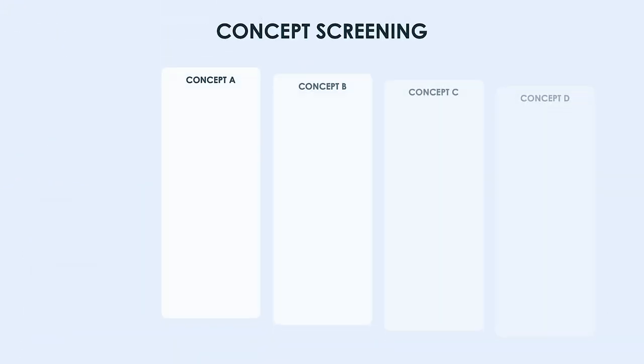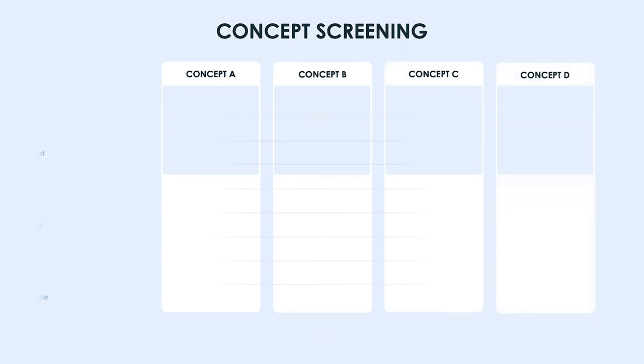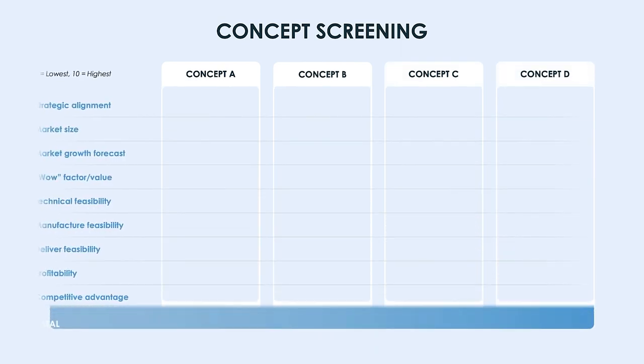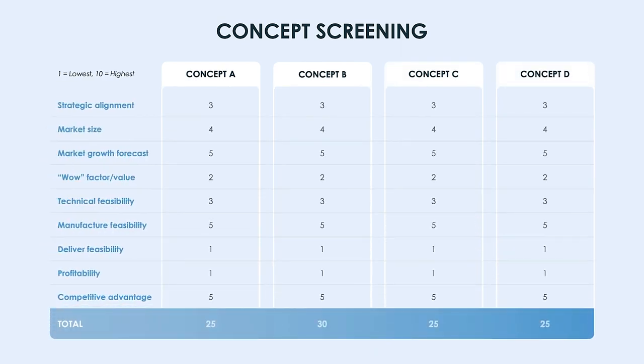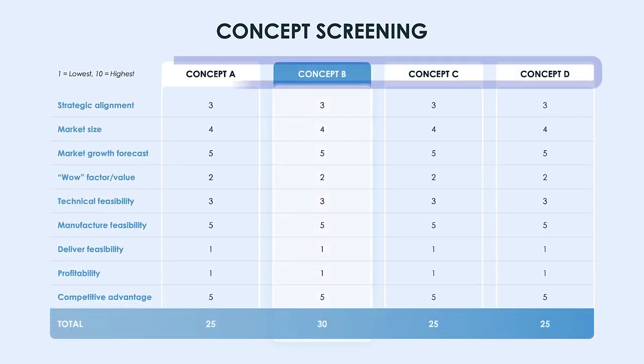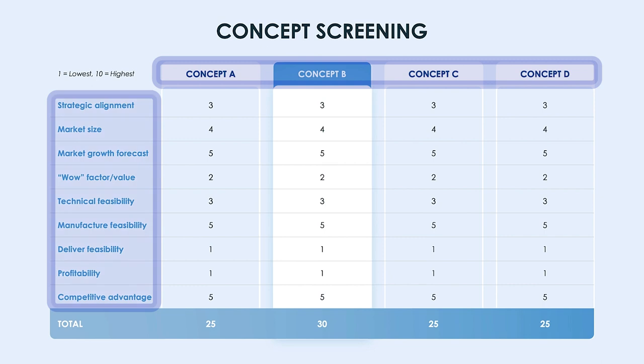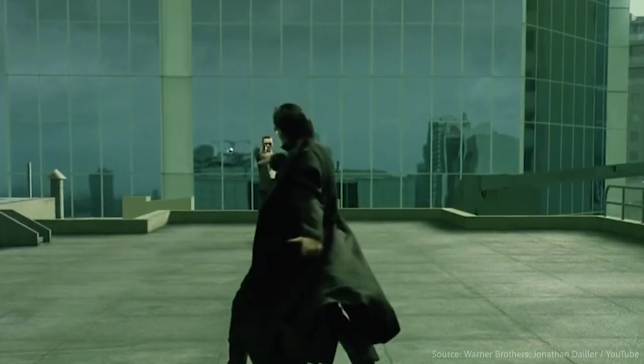For a quantitative evaluation of your ideas, use the concept screening slide to evaluate new ideas against key criteria needed to meet your specific goals. Once there's a vision for what to create, that's when the innovation ambition matrix comes in.